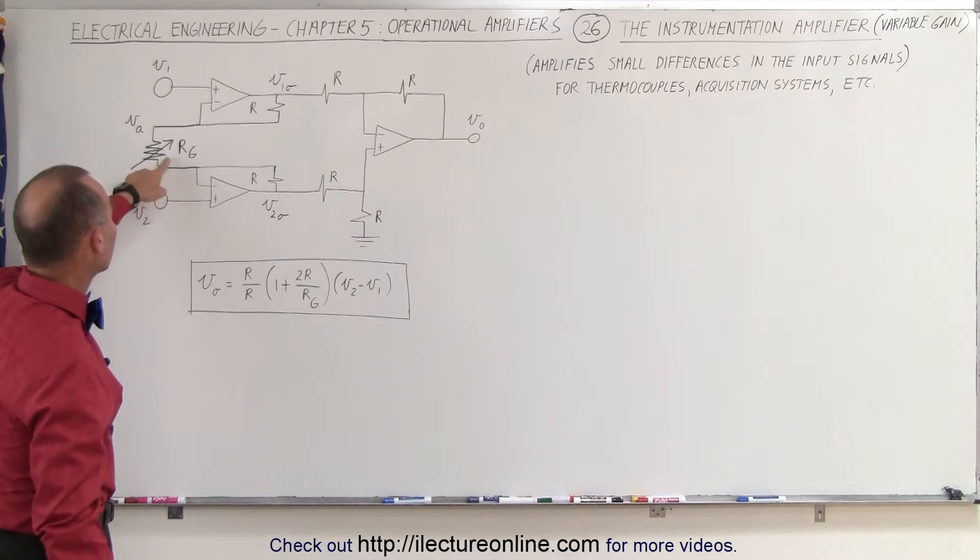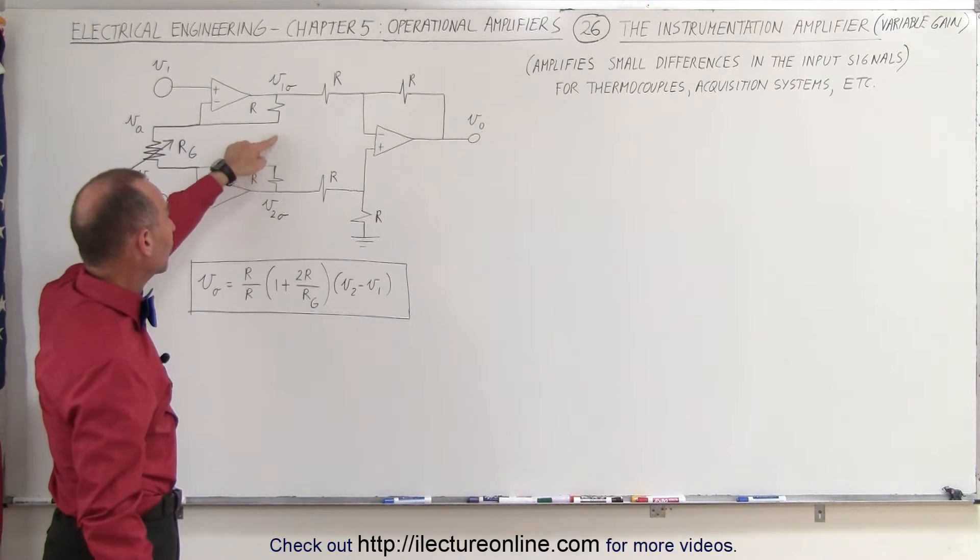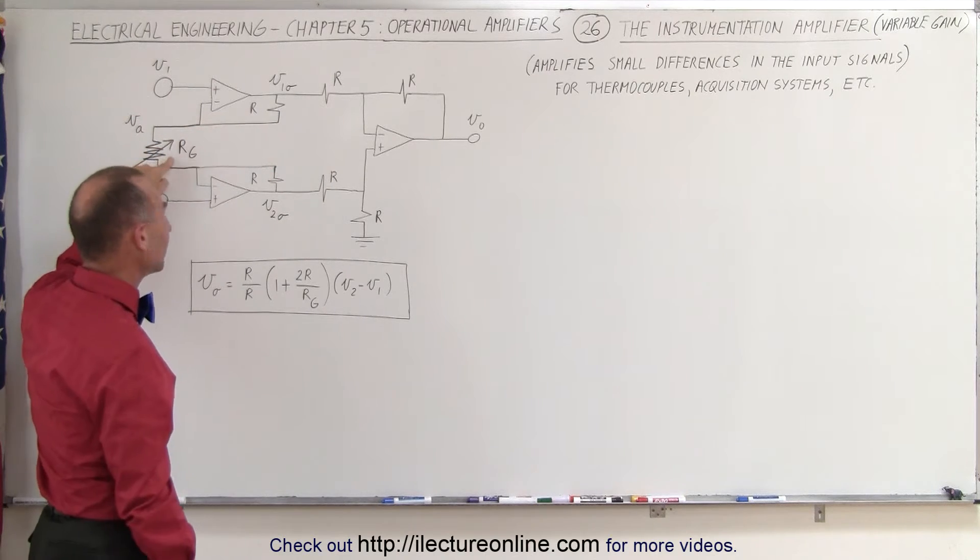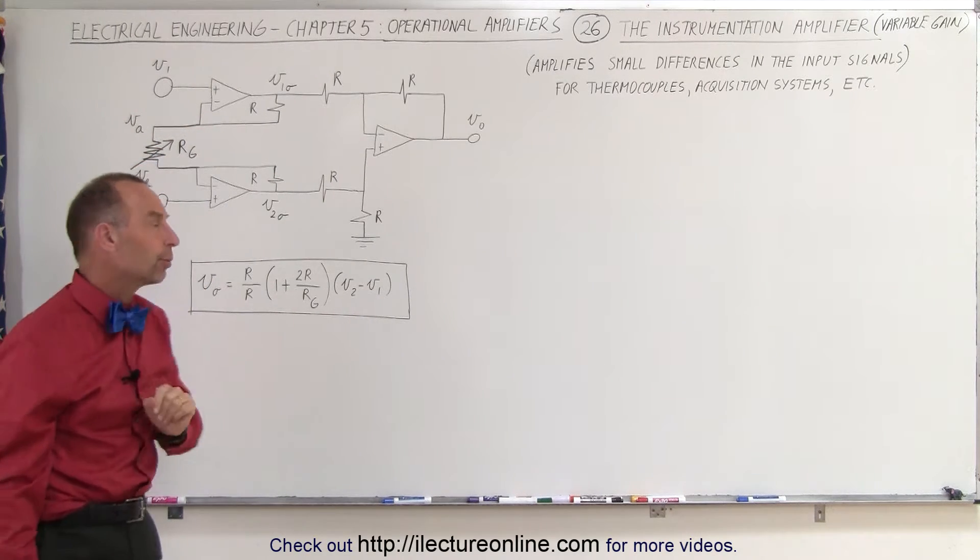Notice that instead of calling the resistor between here and here R4, we moved it out here, but essentially it's the same resistor. Now we made it into a variable resistor.